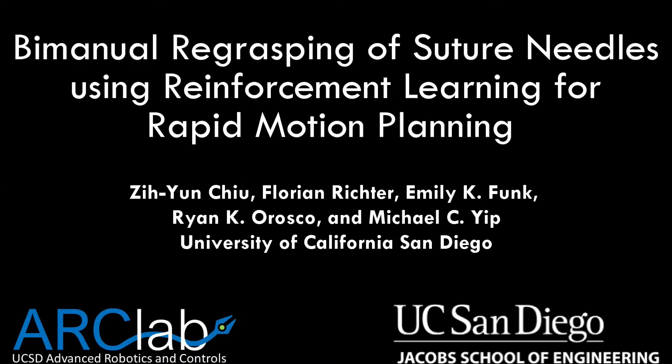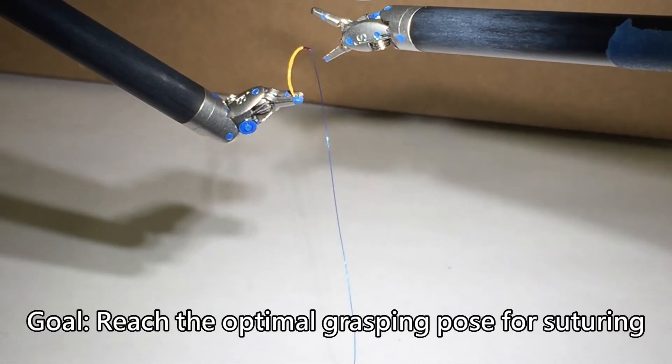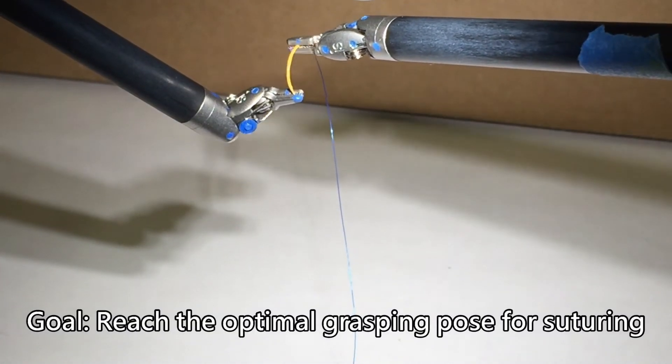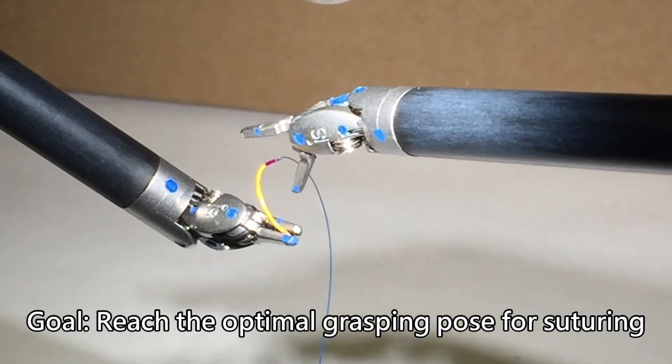We present Bimanual Suture Needle Regrasping Using Reinforcement Learning for Fast Trajectory Generation. Regrasping a suture needle is an important process in suturing, since holding the needle properly can enhance the effectiveness of suture throws.